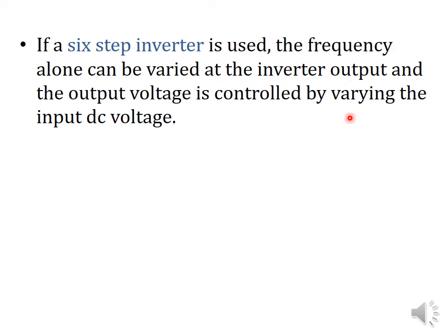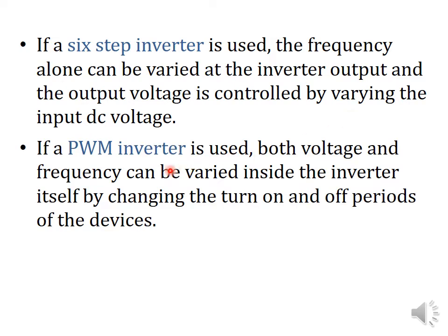To control voltage with a six-step inverter, we have to supply a variable voltage input to it. If a PWM inverter is used, then both voltage as well as frequency can be controlled inside the inverter itself by changing the turn-on and turn-off periods of the devices.